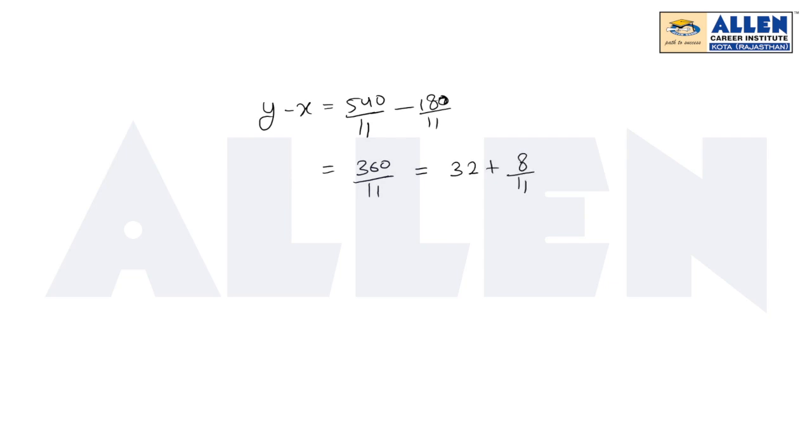Which equals a plus b upon c. The question stated that b upon c should be in lowest form. So 32 plus 8 upon 11 equals a plus b upon c. Therefore, a is 32, b is 8, and c is 11.